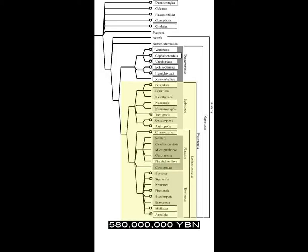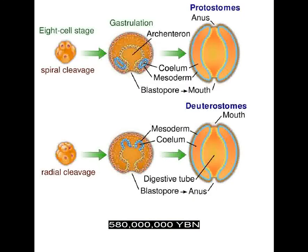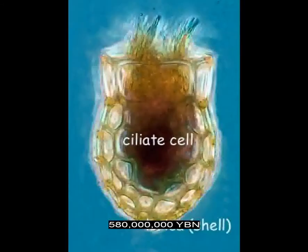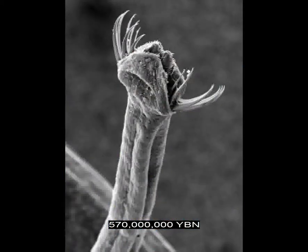The bilaterian protostomes evolve—the ancestor of all ecdysozoa and lophotrochozoa. The difference between protostomes and deuterostomes arises during embryonic development. In protostomes, the first indentation of the gastrula develops into the mouth and the second indentation develops into the anus. The reverse is true for the deuterostomes. The bilaterian deuterostomes evolve—the ancestor of all echinoderms, hemichordates, and chordates. The first shell or skeleton evolves—the first known shell belongs to a group of ciliates called tintinnids. Skeletons evolve independently in different groups of organisms. The bilaterian chaetognatha evolve—arrowworms. The earliest teeth evolve. Animals start to eat other animals. The evolution of teeth and animal predation starts an arms race that rapidly transforms ecosystems around the Earth. Teeth and shells evolve as advantages to survival.